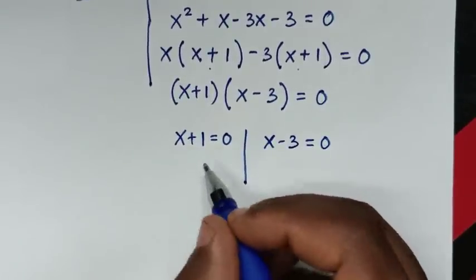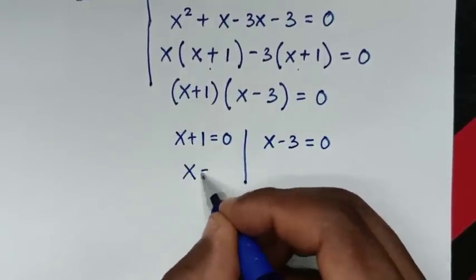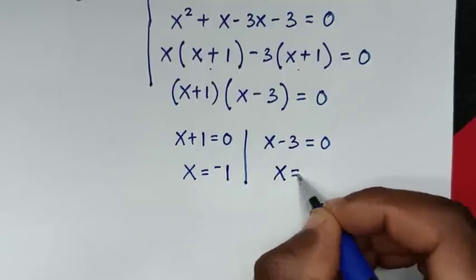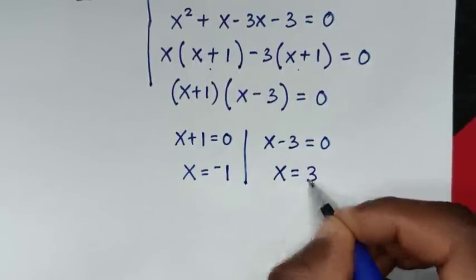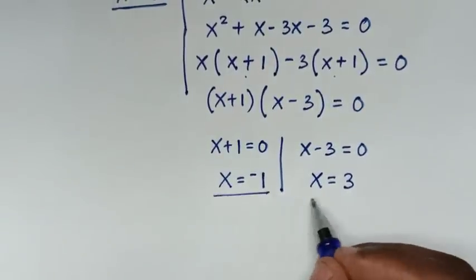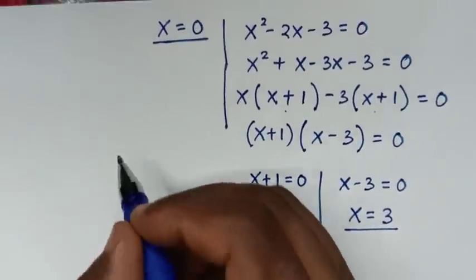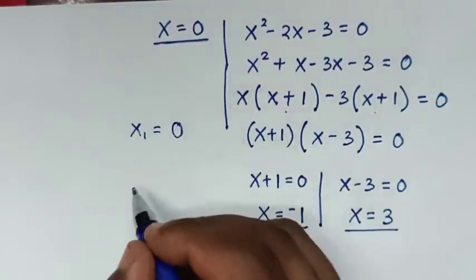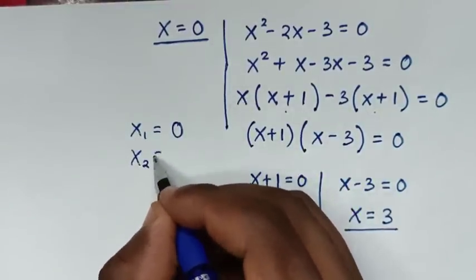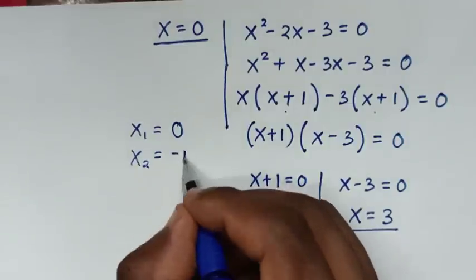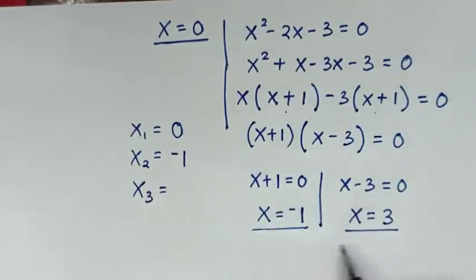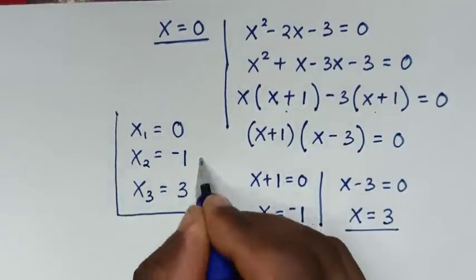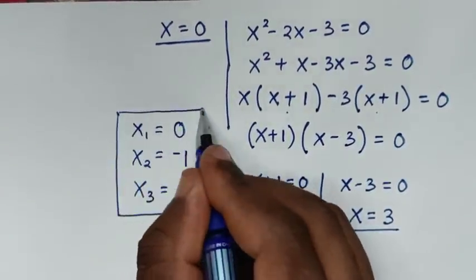From the first solution x + 1 = 0, we get x = -1. From the second solution x - 3 = 0, we get x = 3. So the first value of x is 0, the second value is -1, and the third value is 3. These are all the values of x in this problem.